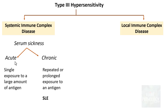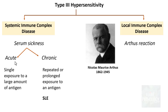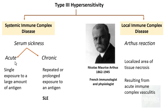The second important category is localized immune complex disease, also referred to as the Arthus reaction, named after Nicolas Maurice Arthus, a French immunologist and physiologist who described the phenomenon in 1903. He observed this reaction after injecting horse serum into rabbits that had been previously sensitized to it. The reaction produced a localized area of tissue necrosis due to acute immune complex vasculitis.